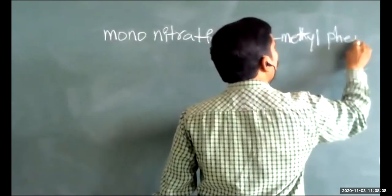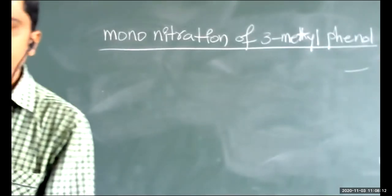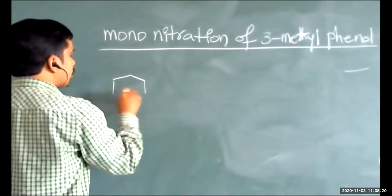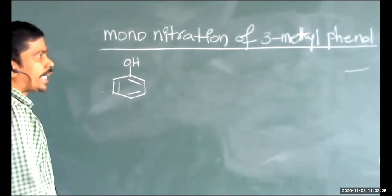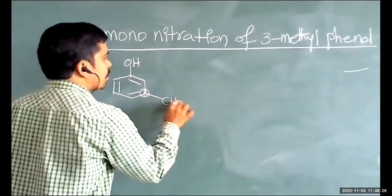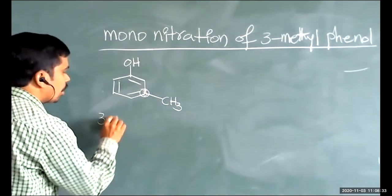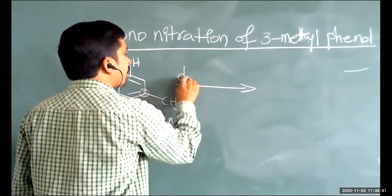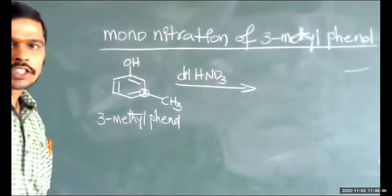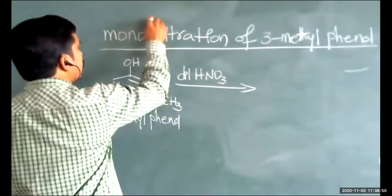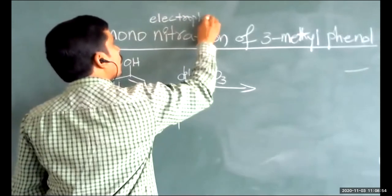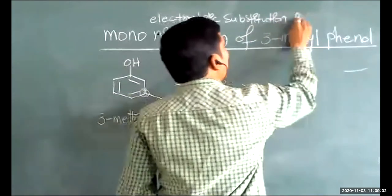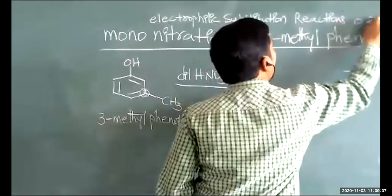When 3-methylphenol undergoes nitration using dilute HNO3, the nitration reaction is an example of an electrophilic substitution reaction. Electrophilic substitution takes place at the ortho position and the para position. Regarding the functional group OH at C1, the second and sixth carbons are the ortho carbons.